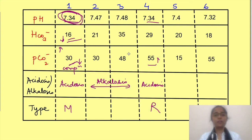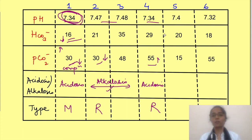In the second and third scenarios, pH is more, so these are alkalosis cases. In the second scenario, pCO2 is less, so the answer is respiratory alkalosis, and bicarbonate is less due to compensation. While in the third scenario, bicarbonate is more, so this is metabolic alkalosis, while pCO2 is more due to respiratory compensation.